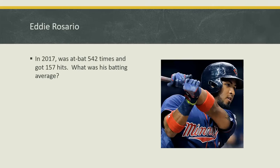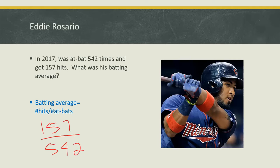Let's calculate this for Twins player Eddie Rosario. In 2017, he was at bat 542 times and he got 157 hits. The formula for batting average is the number of hits divided by the number of times at bat. In this case, that means 157 divided by 542.